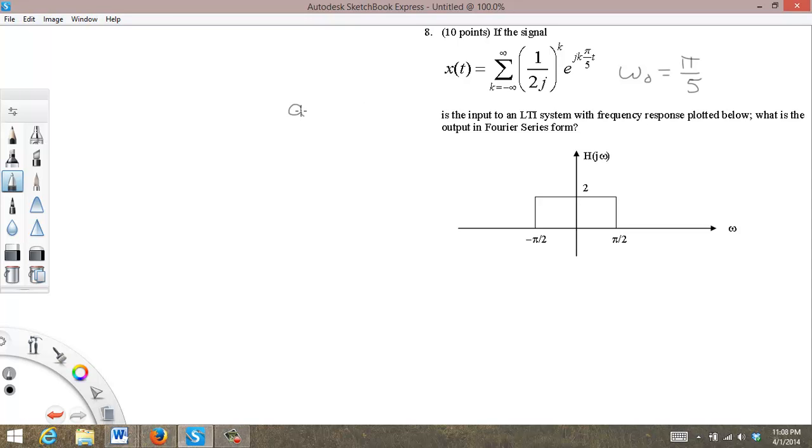And a sub k is equal to 1 over 2j raised to the k. And this is an infinite sum from minus infinity to infinity.